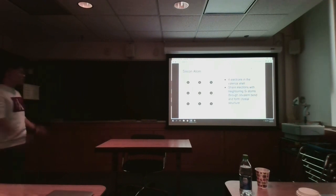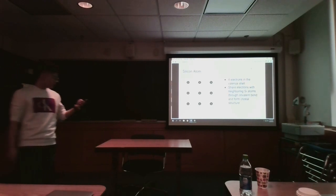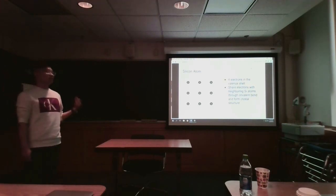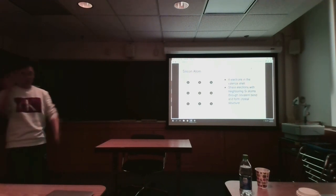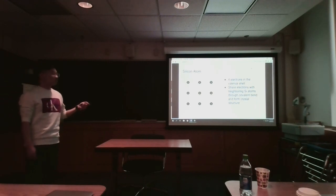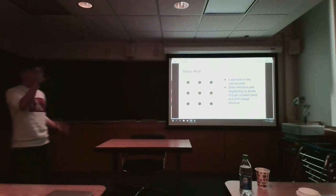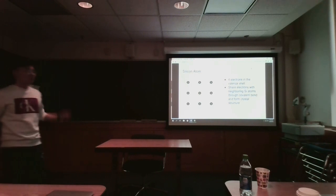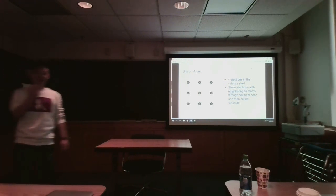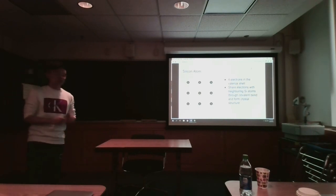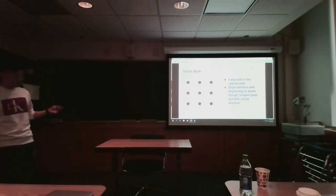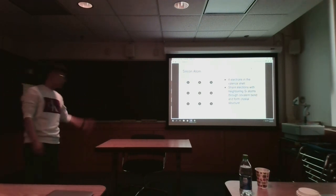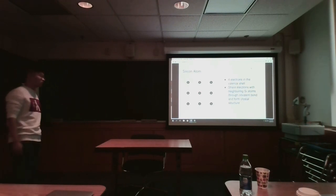Let's look at silicon, the most common semiconductor. As mentioned, there are 14 electrons in the silicon atom, and four of them are in the valence shell, which is the outermost shell. In order for an atom to be stable, the valence shell needs eight electrons. Since silicon has four valence electrons, it will share another four electrons with neighboring silicon atoms, forming crystal structures.